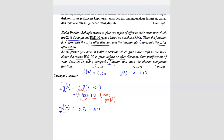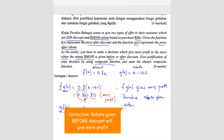To justify, you can substitute a value — for example, RM100 purchase — into both composites to see how much the owner keeps. Therefore, f(g(x)) gives more profit to the store. This means the rebate should be given after the discount, not before.